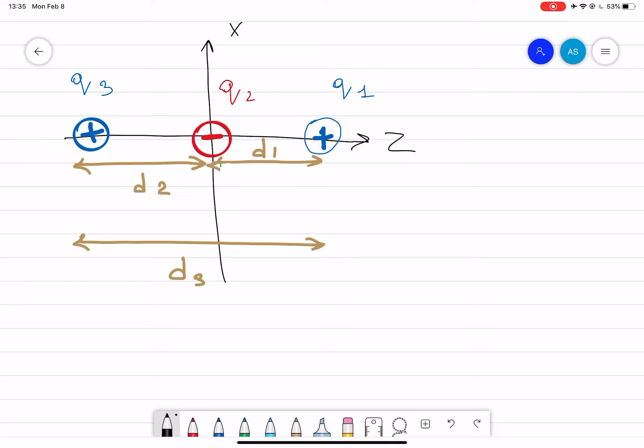Here we have three charges positioned at a certain distance. We have q1, q2, and q3 charges. q1 is positive, q2 is negative, q3 is positive.